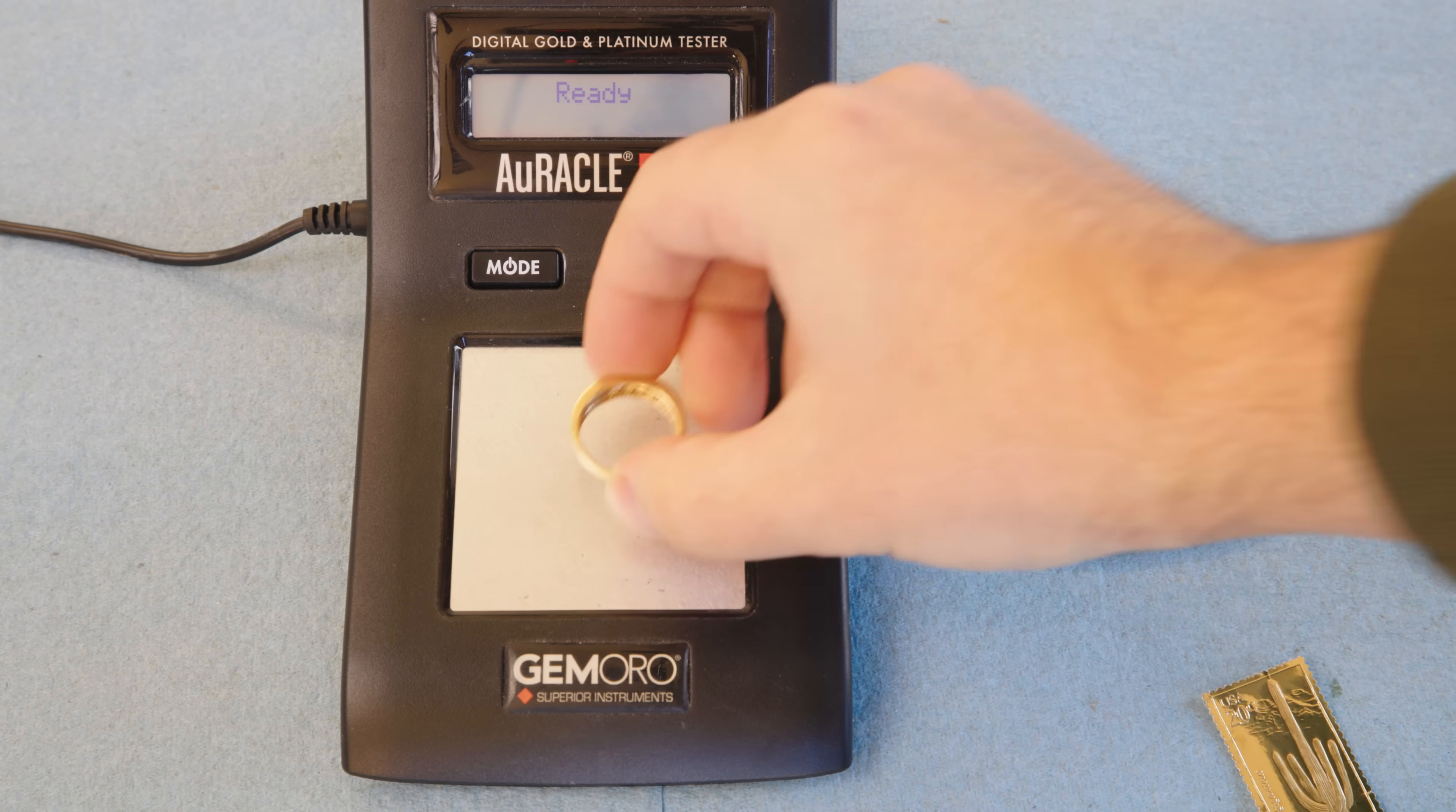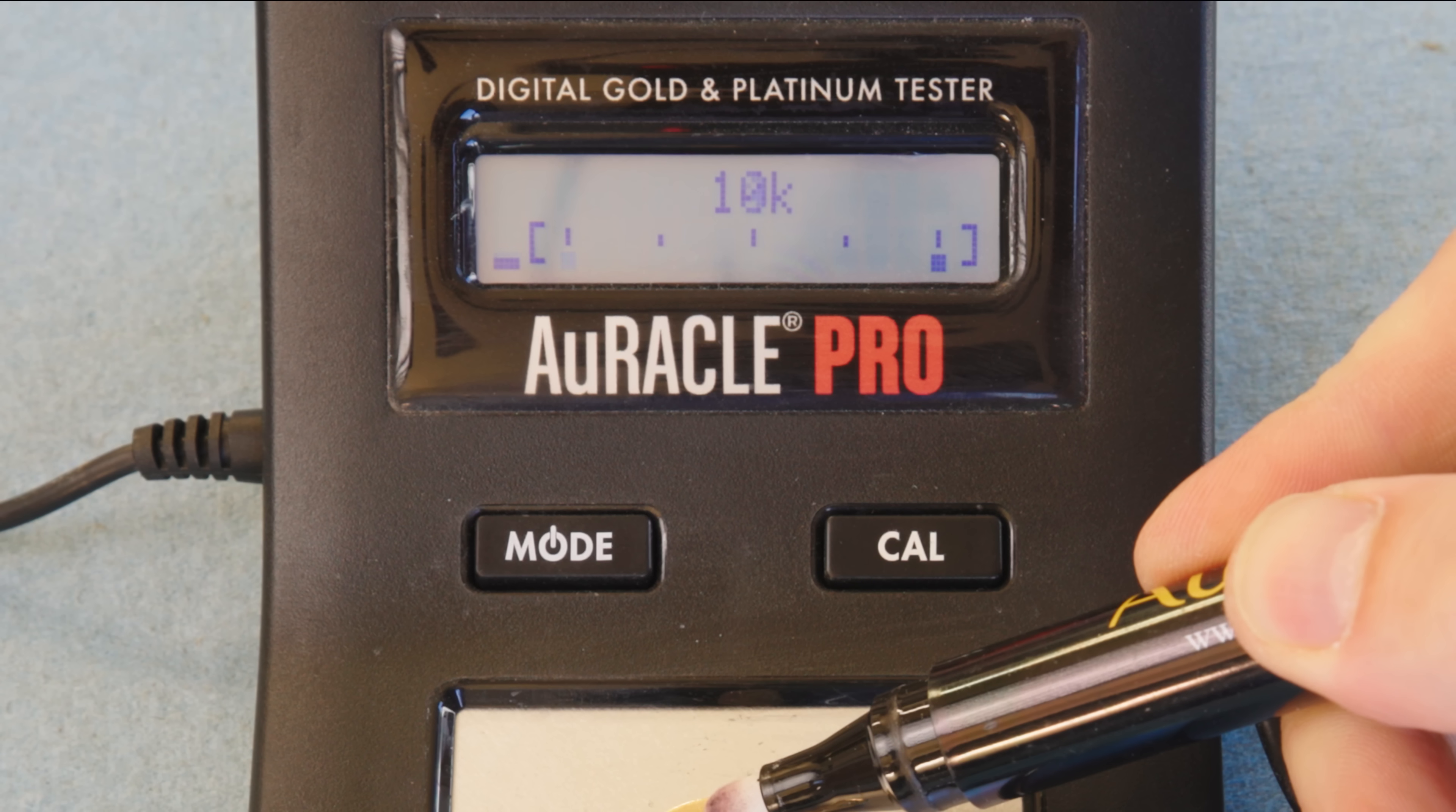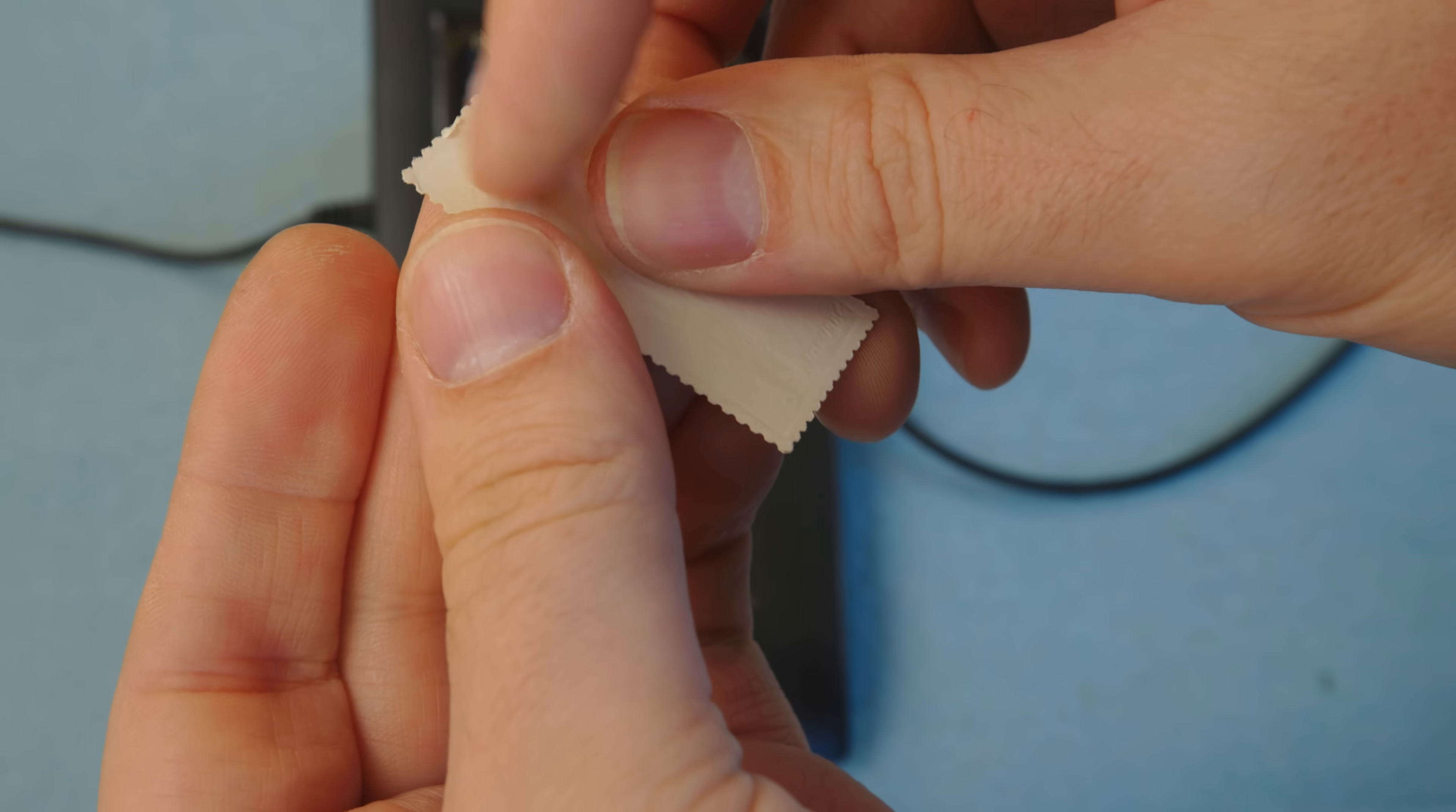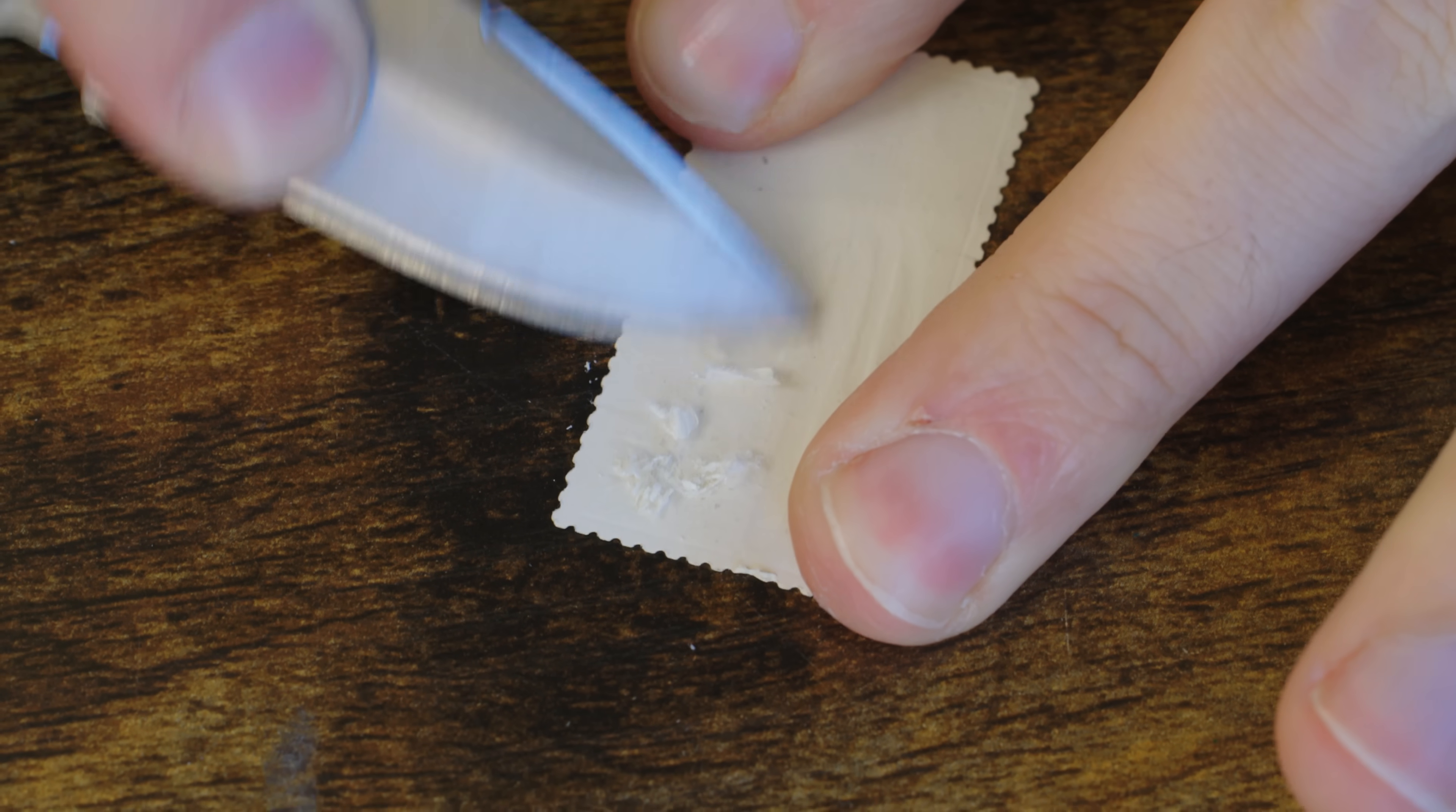And just to prove that this tester actually works, here's a 14 karat gold ring. So I thought maybe if I could scrape the paper off of the back, where I could almost reach the gold layer and maybe it would test then.